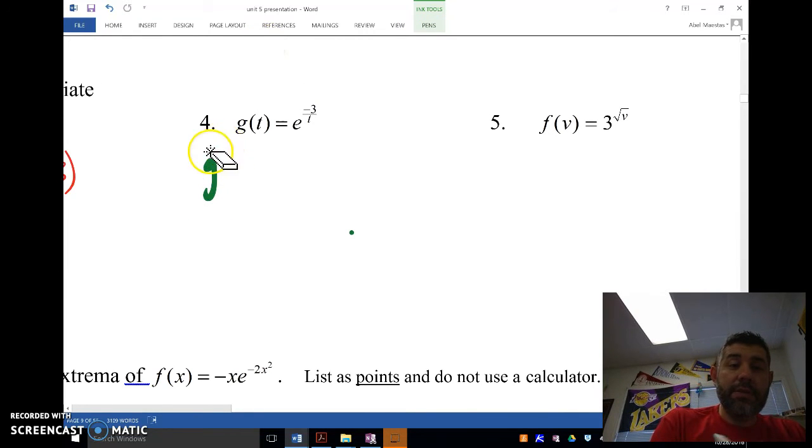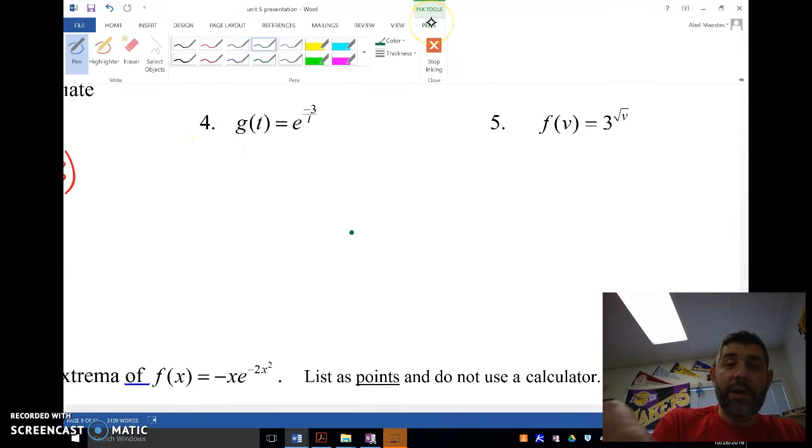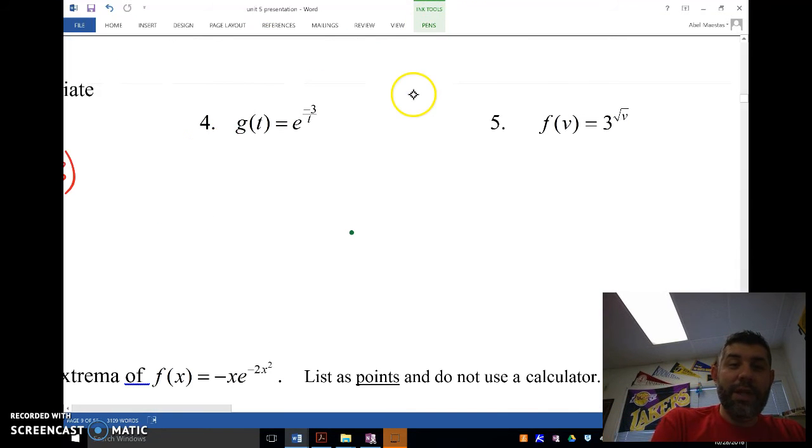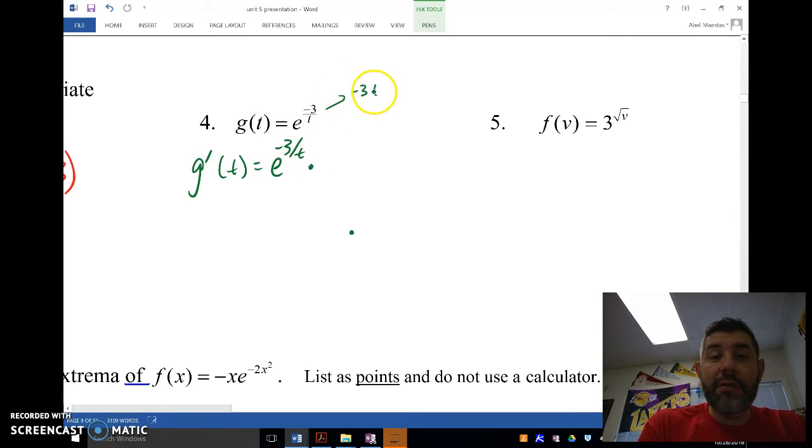G prime of t is going to be equal to e to the negative three over t times, well just on the side here, I'm going to change that to negative 3t to the negative one. So I need to do the derivative of that to do the chain rule, so I'm going to have 3 over t squared. So now let's do the last one here.